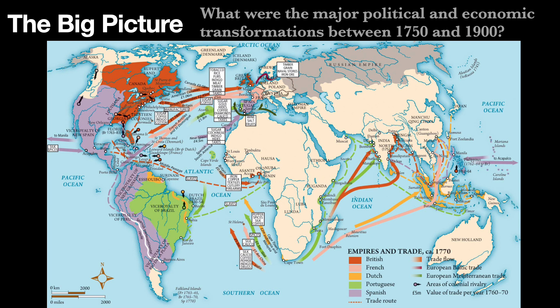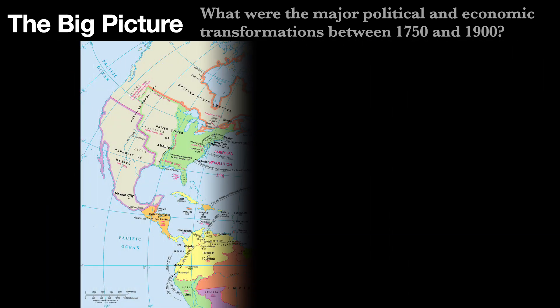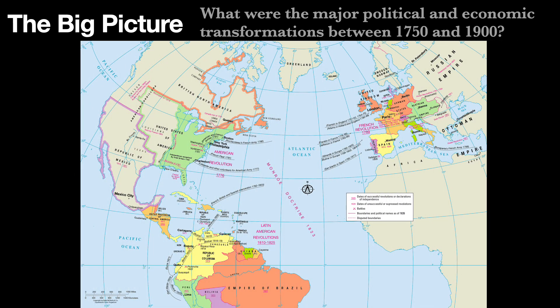Indian cotton textiles were being exported and traded around the world. And if we keep moving a little further west, the Ottoman Empire, even though it was not at its height in terms of political power, was still as powerful, if not more powerful, than any European state. By 1900, all of those things are going to change and look really differently. And there's a few things that are happening simultaneously. The first is this series of revolutions that sweeps through the Atlantic world.